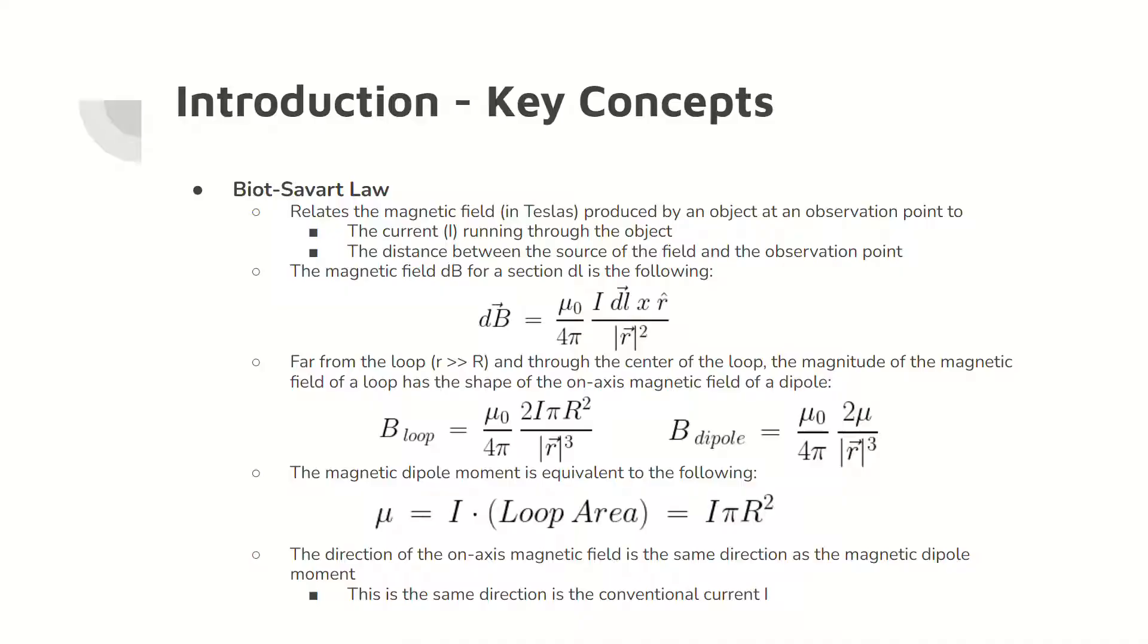The Biot-Savart law is the major key concept for this lab. This law relates the magnetic field produced by an object at an observation point to the conventional current I and the distance r between the object and the observation point. The magnetic field for a small section dl is shown.